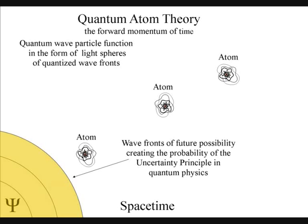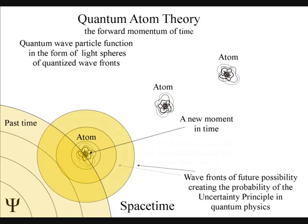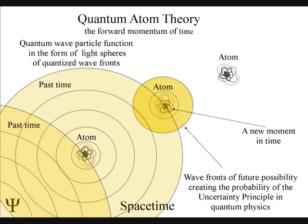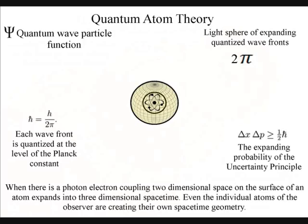In this theory, the emission and absorption of light from one atom to another creates a forward motion of time. Each individual atom of our universe creates its own space-time geometry relative to its position and momentum.